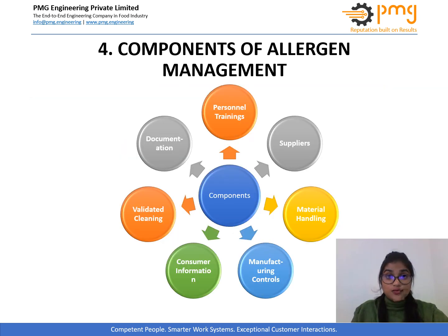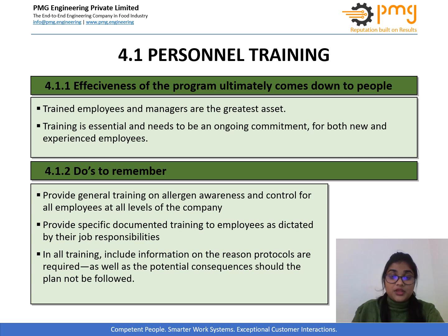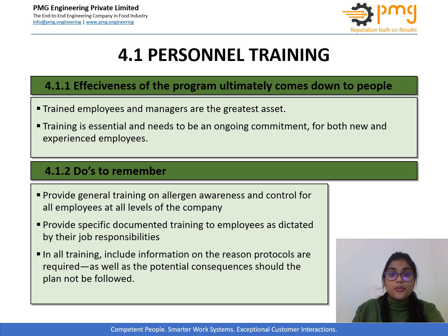In the next section of this module, I will discuss about seven essential components that are essential for implementation of an effective allergen management program in a food industry. So let us now begin with the first component, that is personnel training or practices. Human error is one of the major contributing factors for product recalls related to allergens. Therefore, there is a need to impart training to employees for making them aware about their role in preventing allergen-based contamination.